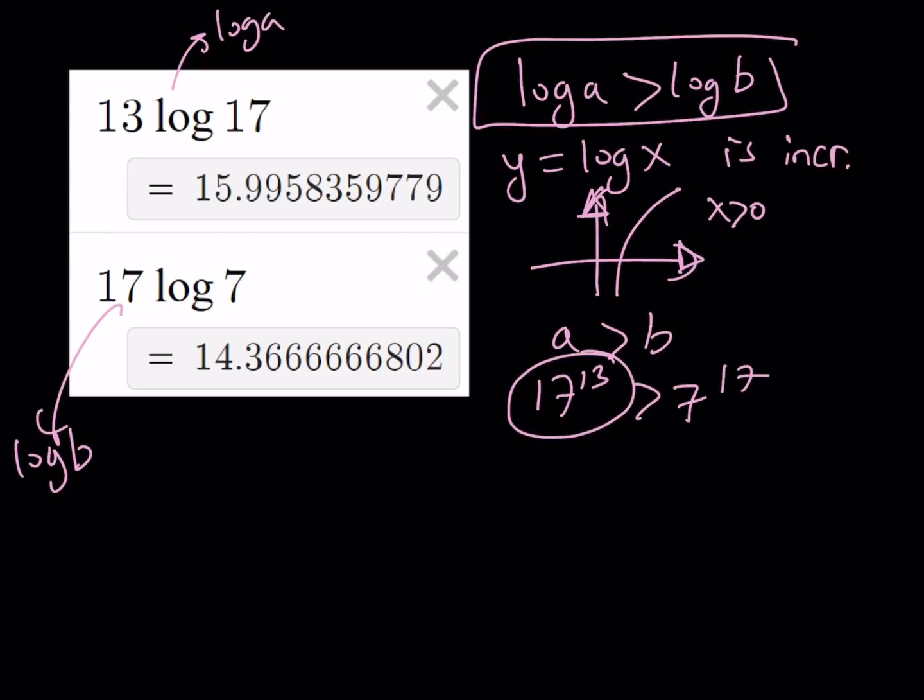But what about the numerical values? Let's go ahead and take a look at the numerical values for these two numbers so that we can see what they look like. 17 to the power of 13 is going to be approximately 9.905 multiplied by 10 to the power of 15. And 7 to the power of 17 is going to be roughly 2.326 multiplied by 10 to the power of 14.